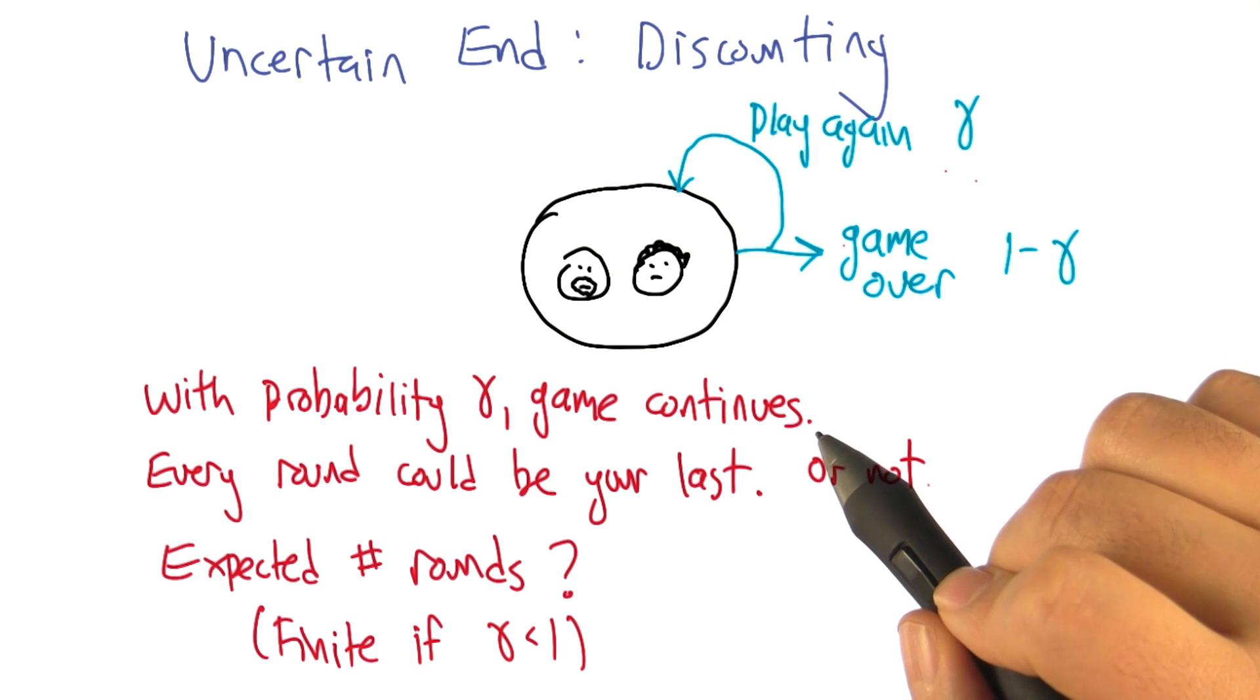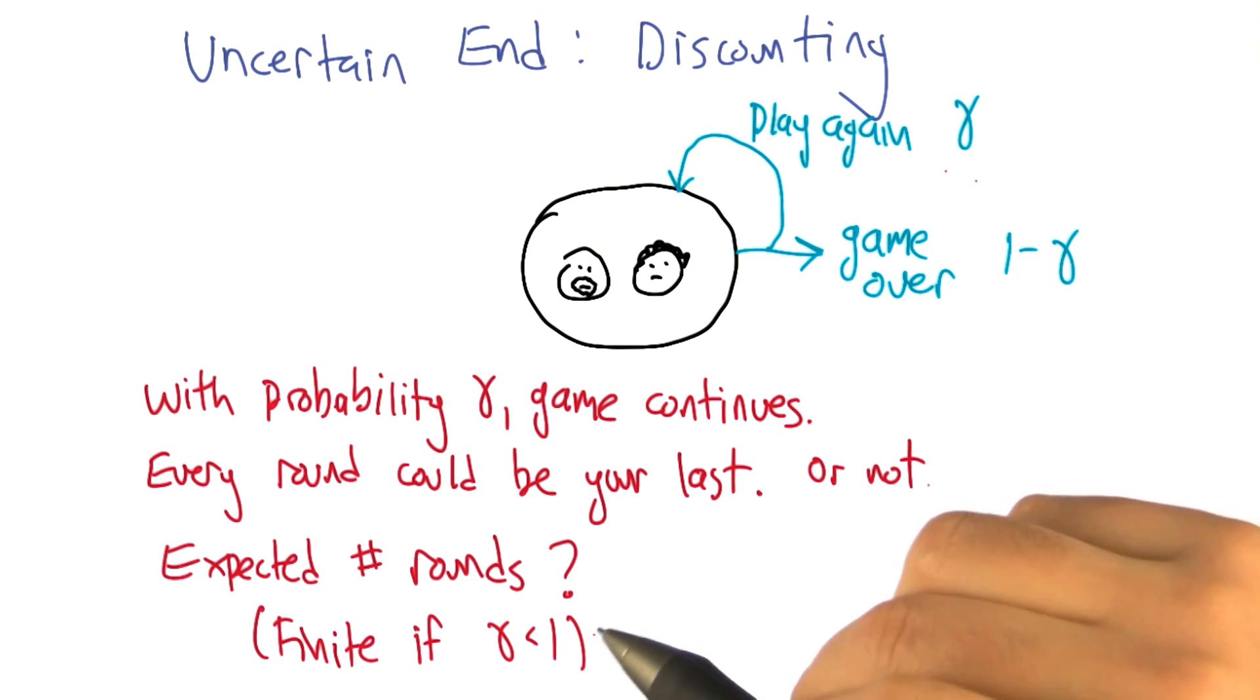Well, I'll bet it's finite if gamma is less than one. Yes, I even wrote that down. Yeah, I'm smart. Or at least I can read.